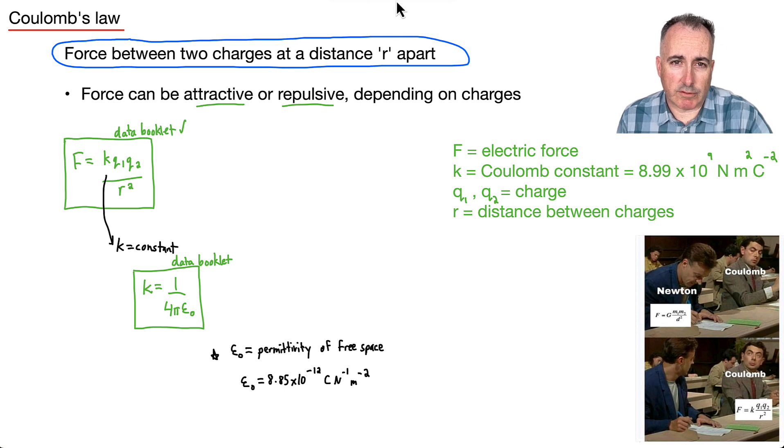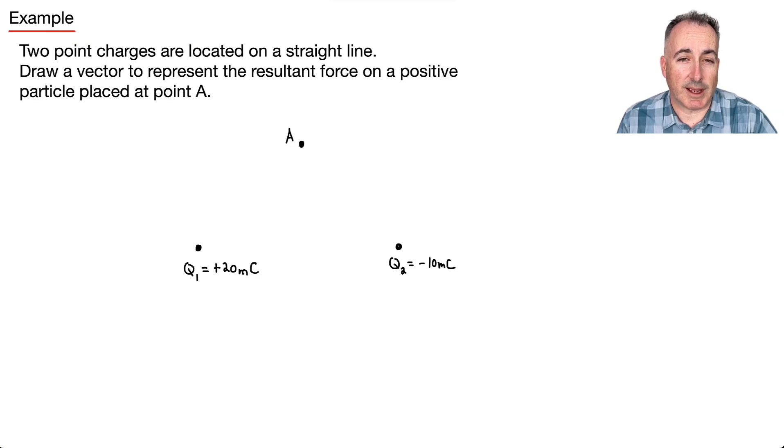Now, what are the units over here for all these different values? Well, electric force is going to be in Newtons. Charge is going to be in Coulombs. And the distance between charges is going to be in meters. And you notice then just how similar these two actually look, right? The Newton's one and Coulomb's. So let's do an example.